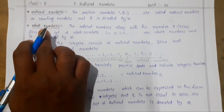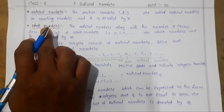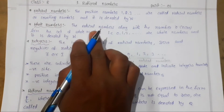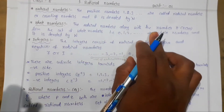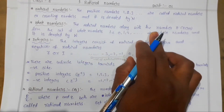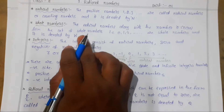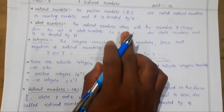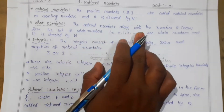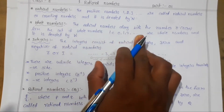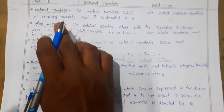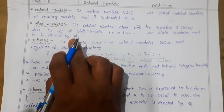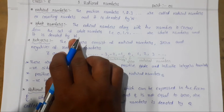The set of natural numbers is denoted by N. Then we learned about whole numbers. Whole numbers means all the natural numbers along with zero. So zero, one, two, three, and so on are called whole numbers, and the set of whole numbers is denoted by capital W.